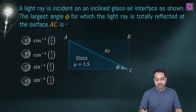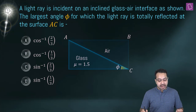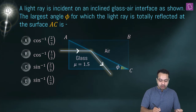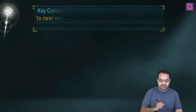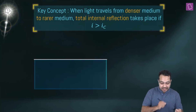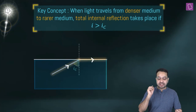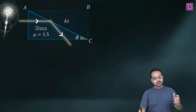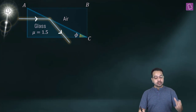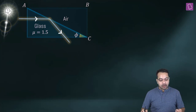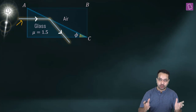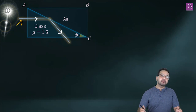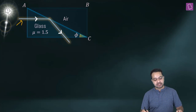A light ray is incident on an inclined glass-air interface. The largest angle φ for which the light ray is totally reflected at surface AC is asked. The key concept: when light travels from denser to rarer medium, total internal reflection takes place if the angle of incidence is greater than the critical angle. Here AC is the glass-air boundary and light travels from denser to rarer medium.